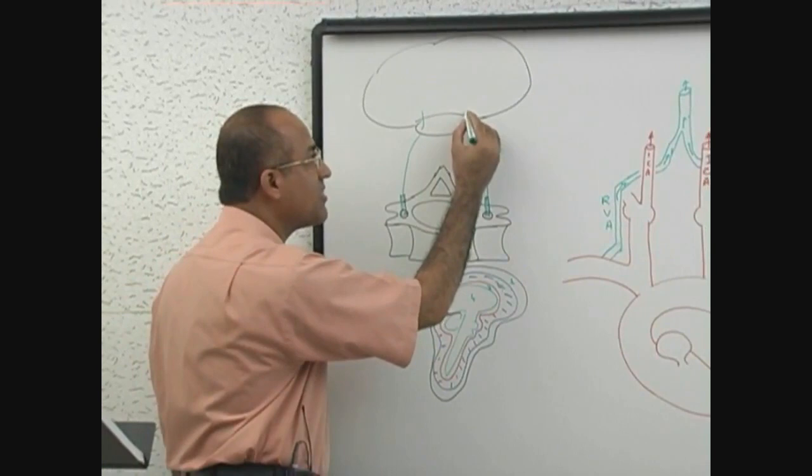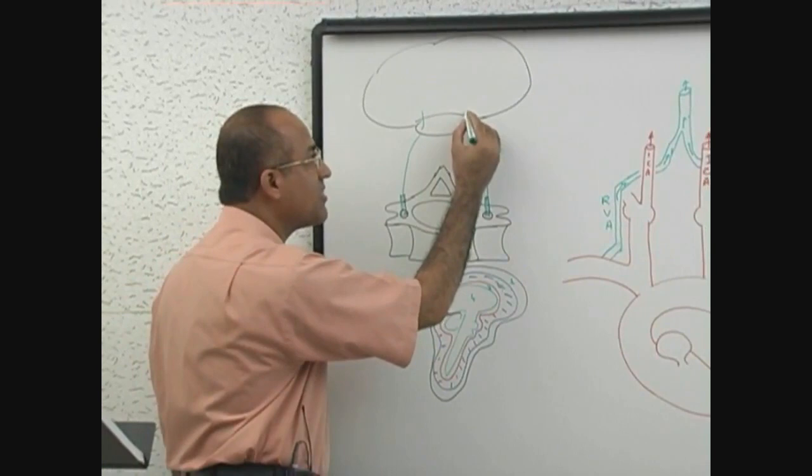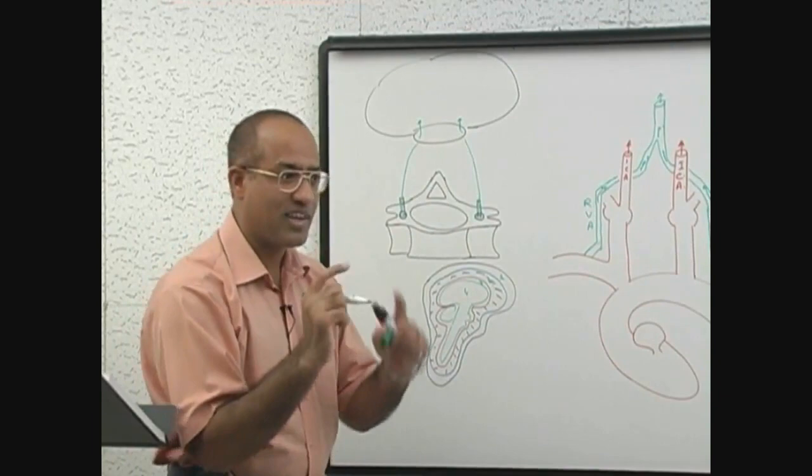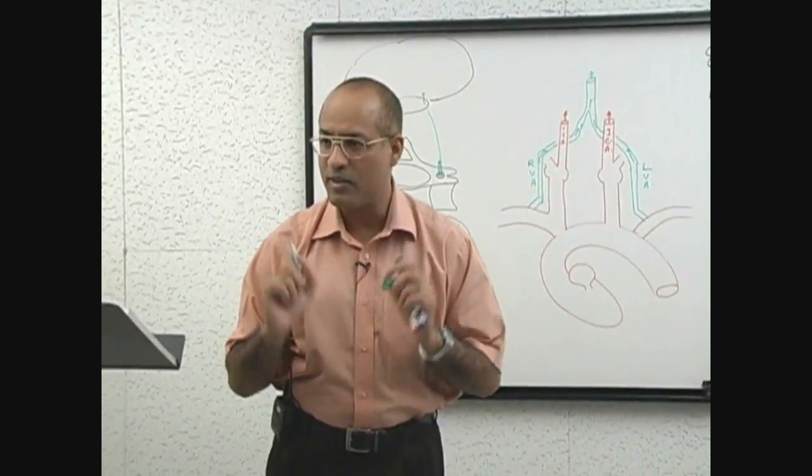So it means they must pierce dura mater, they must go through dura mater. Then major arteries should pierce arachnoid mater and then appear into subarachnoid space. There the major vessels are, and from there the final small branches are going into brain substance.